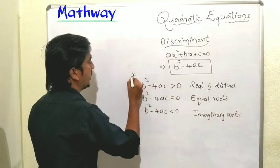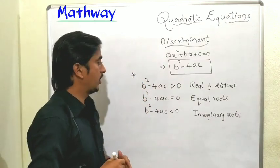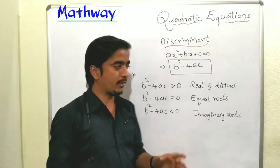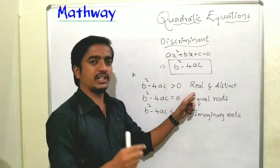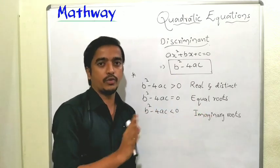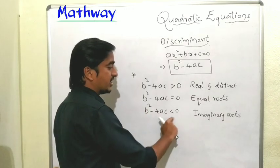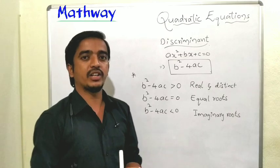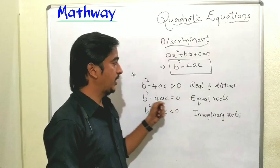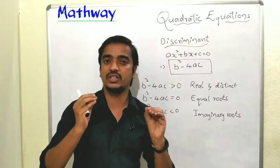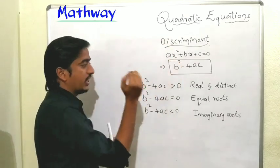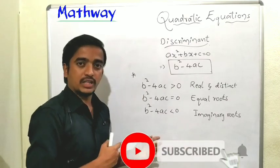This is very important — it is sure to appear in the exam. If the discriminant is greater than 0, it has real and distinct roots. If the discriminant is equal to 0, it has equal roots. If the discriminant is less than 0, it has imaginary roots. By the discriminant, we can determine the nature of the roots. These are the most important topics in the quadratic equation chapter.